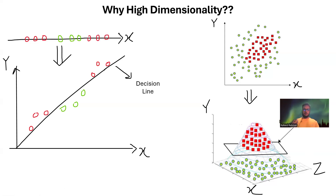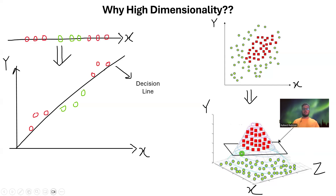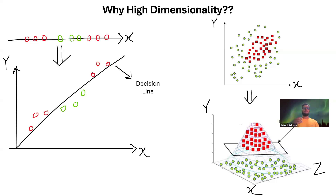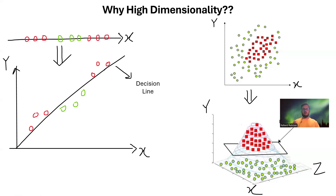You might be confused because I mentioned separating by a point, then a line, then a 2D hyperplane. Linear separability doesn't mean separating by a line. What it means is: if your points are n-dimensional, they should be separable using an (n-1)-dimensional hyperplane. So for 1D points, separation by a 0-dimensional point; for 2D points, by a 1-dimensional line; for 3D points, by a 2-dimensional hyperplane. When you take points to a higher dimension, there is a higher chance of making them linearly separable.